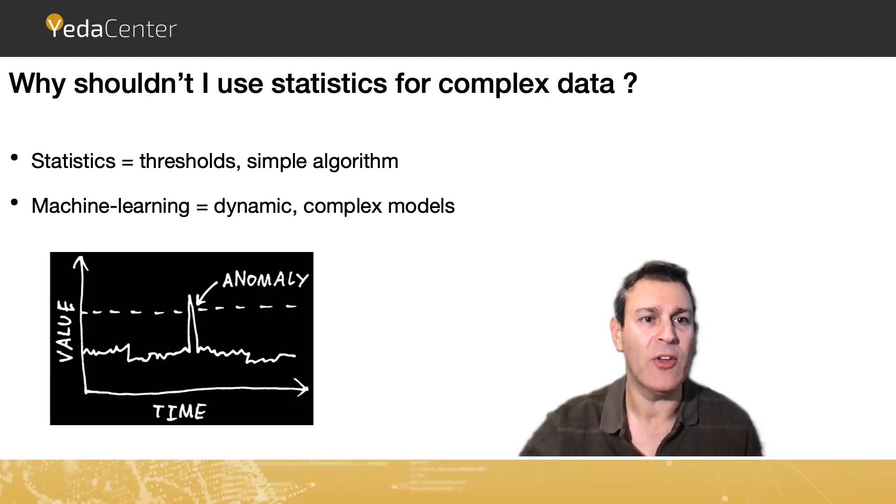So why shouldn't I use statistics for complex data? So let's take, for example, anomaly detection. Usually in statistics, I measure the distribution and then I can set some standard deviation or x amount of standard deviation to represent some anomaly. Or I can set some static threshold in order to define that this is an anomaly. Usually we implement in such a way simple algorithms.